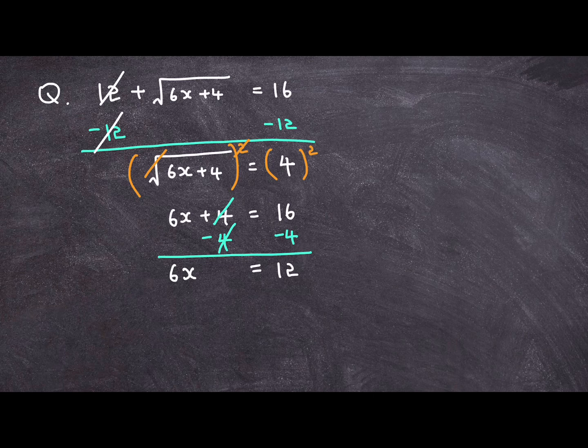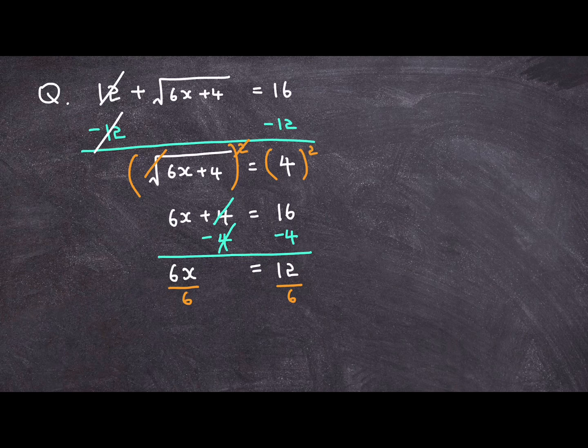And if I were to further isolate this x, I need to remove this coefficient of 6 and I can do that by dividing both sides of the equation with 6.